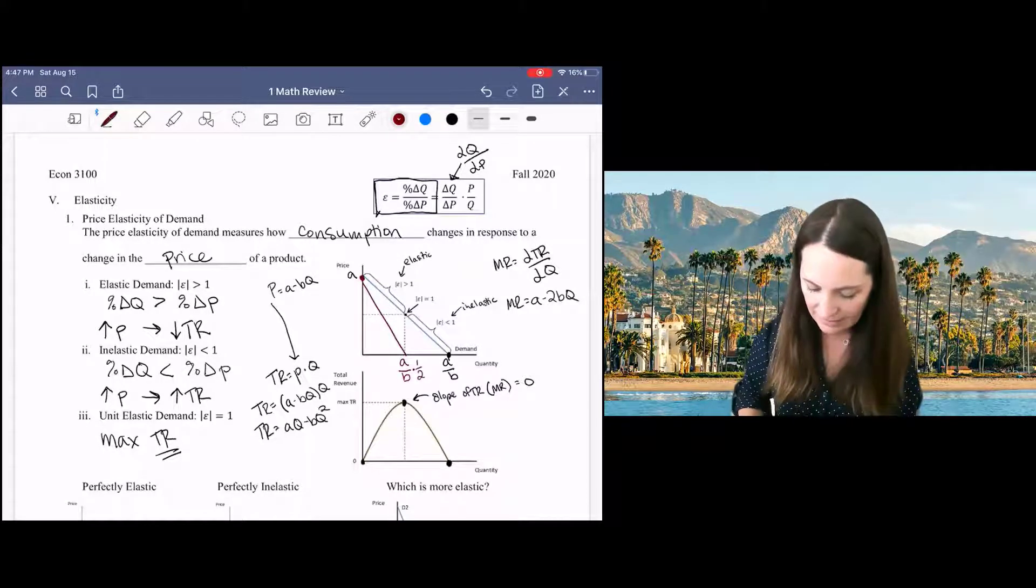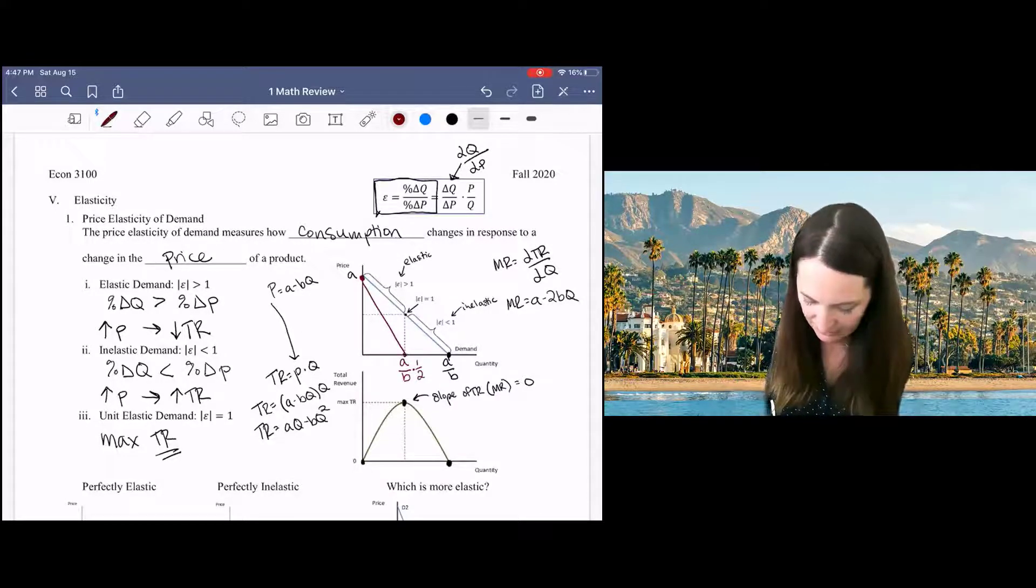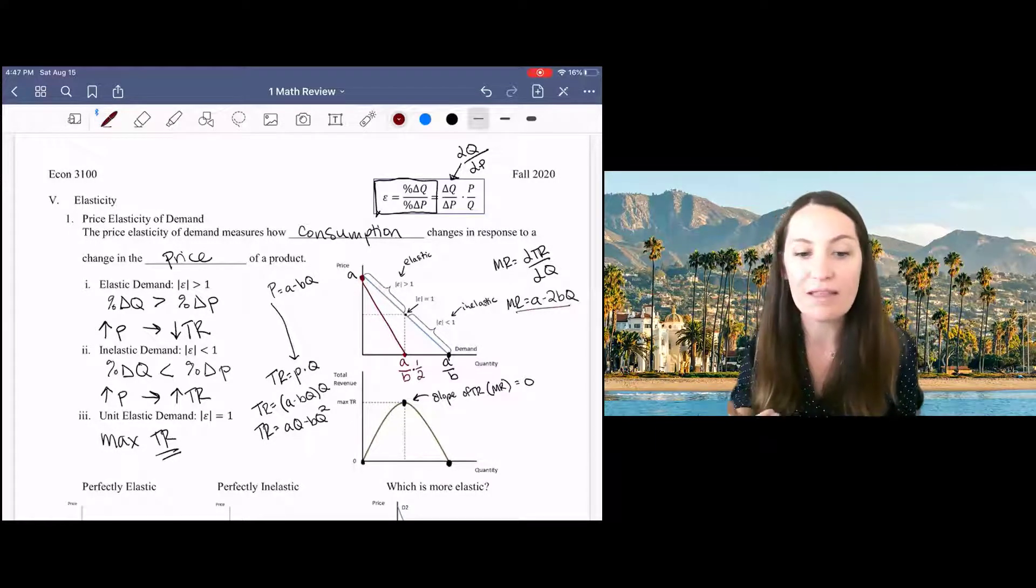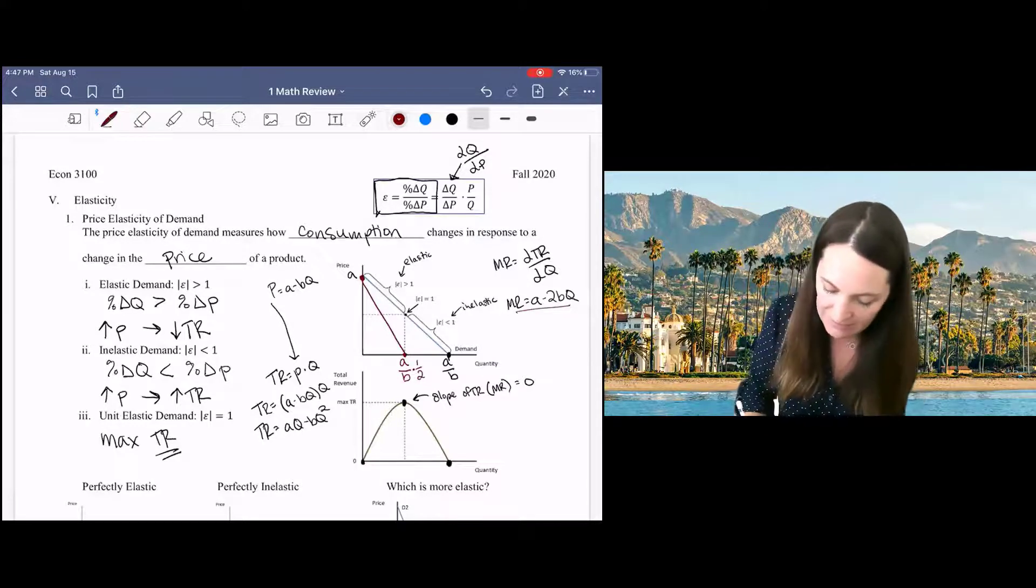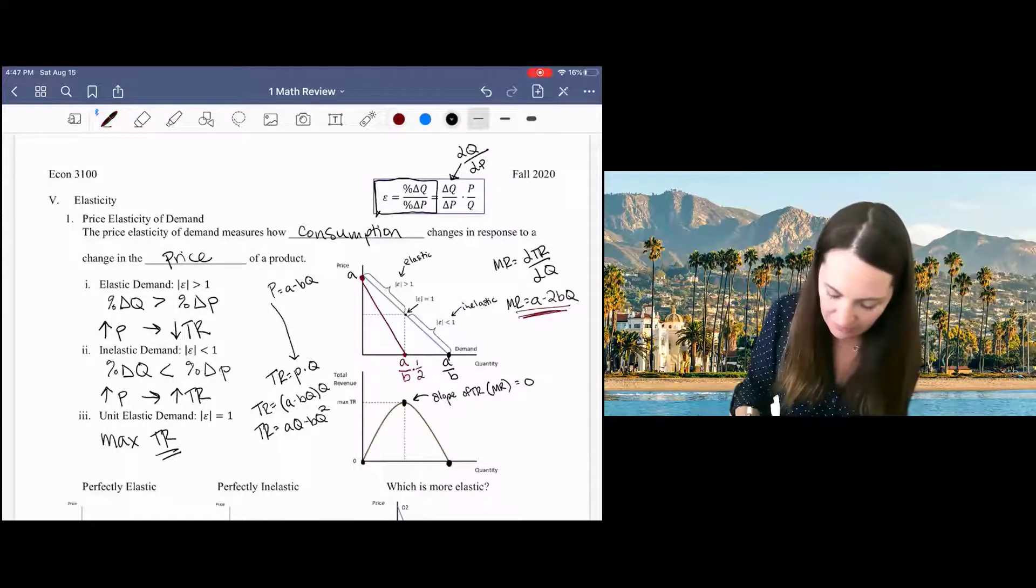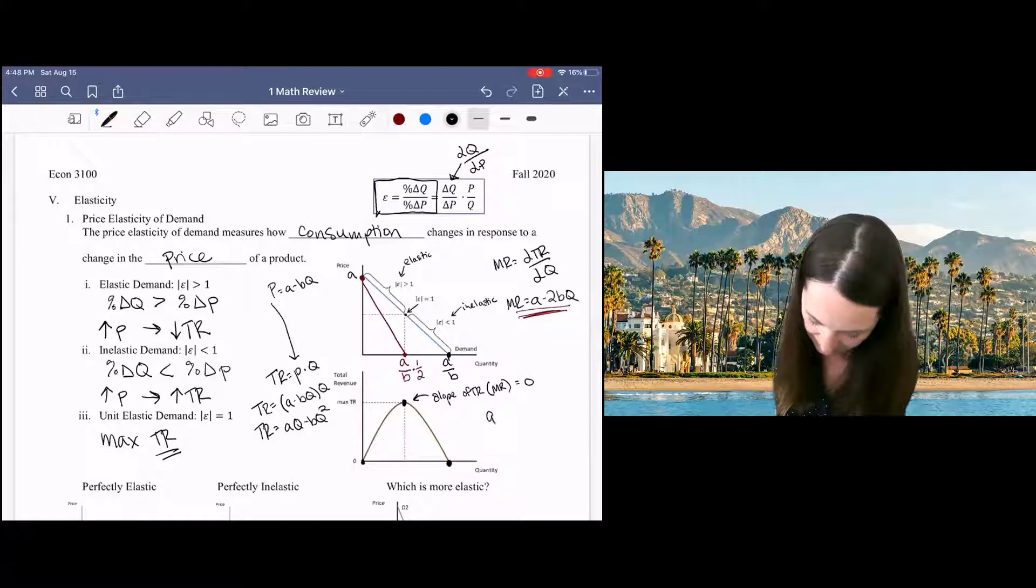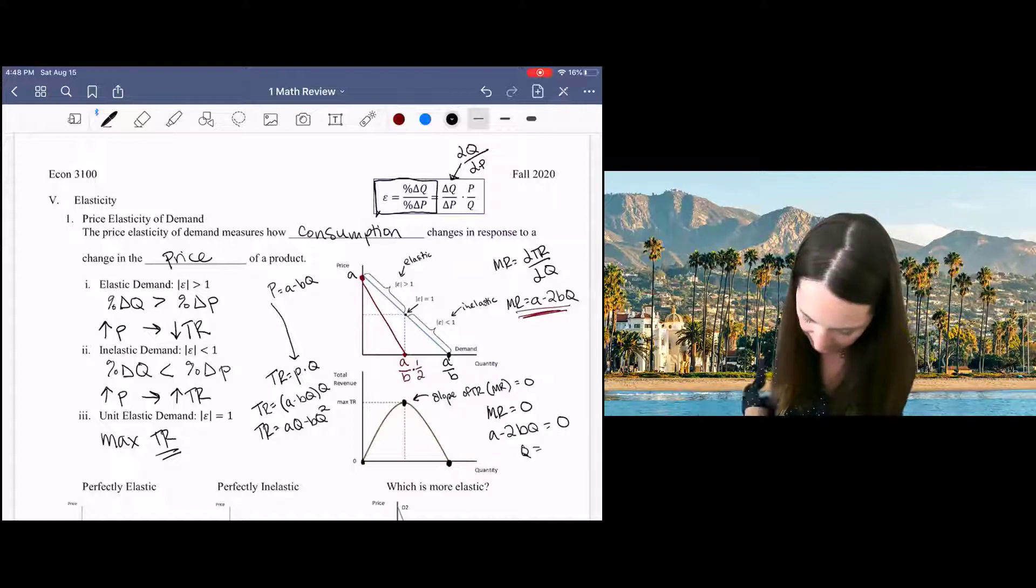And you can see that it goes to zero here at this point, based on this equation. We can also see that that is the point that maximizes total revenue by taking this marginal revenue function and setting it equal to zero. So if I set marginal revenue equal to zero, I get A minus 2BQ equals zero, and I can solve, and I get a quantity that is A over 2B.